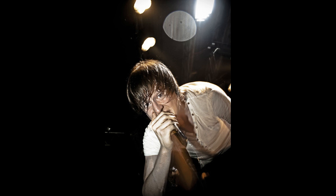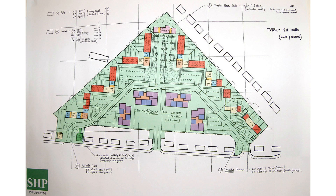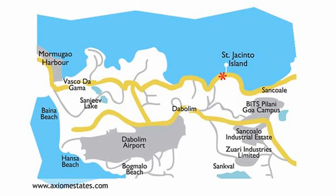Death is a reality that we all have to face at some point in our lives. It's not a pleasant thought, but it's a fact. And when it happens, it can leave behind a lot of complications and problems for our loved ones. That's where estate planning comes in. It's a way to ensure that your assets are distributed according to your wishes, and that your loved ones are taken care of after you're gone. In this video, we'll be discussing the importance of estate planning and why it's something that everyone should consider.